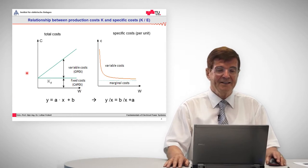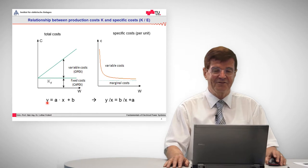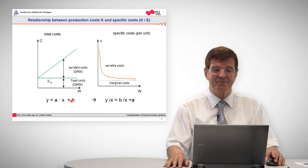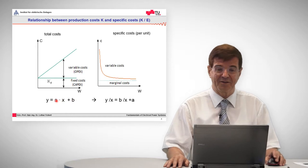So that means the general mathematical expression for this is Y is A times X plus B. B is the fixed cost, A is the proportion of the variable costs.